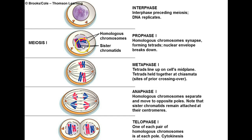In prophase 1, the nuclear envelope is breaking down and dissolving. Chromosomes have formed from the chromatin, but this time the chromosomes are paired together as homologous pairs. We have another process that occurs during this time called crossing over — it's an exchange of chromatid segments between homologs.